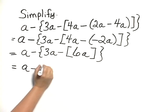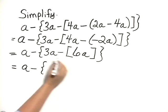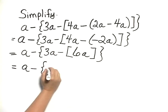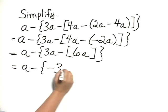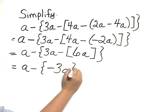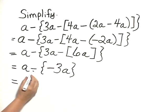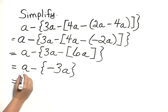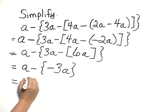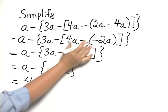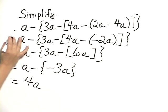So I have A minus, and now I can work in my last set of grouping symbols, 3A minus 6A is negative 3A. And the brackets are all gone. Now I have A minus a negative 3A, which is A plus a positive 3A, which gives me 4A. And if I work from the inside out, I can simplify this expression as 4A.